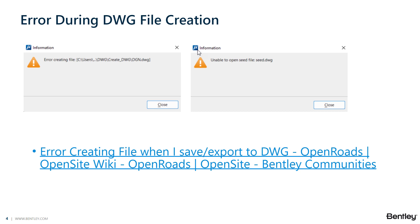The key is that if this file is already open in another process or program — for example, MicroStation, or you may have it open in AutoCAD — you might get a message indicating that there's an error with file creation. In earlier versions of Connect Edition, you were more likely to get this error. Later versions of Connect will generally tell you that the file is already open or that it's read-only.